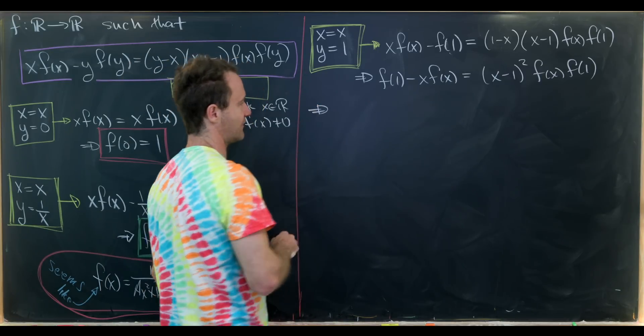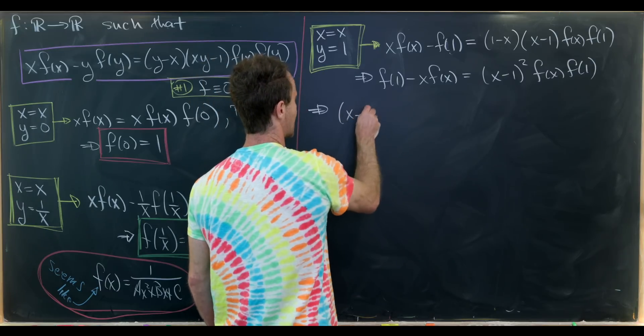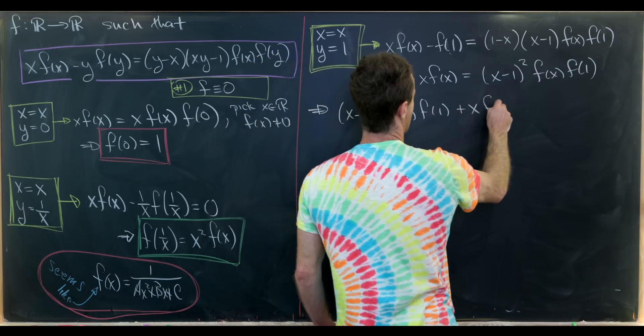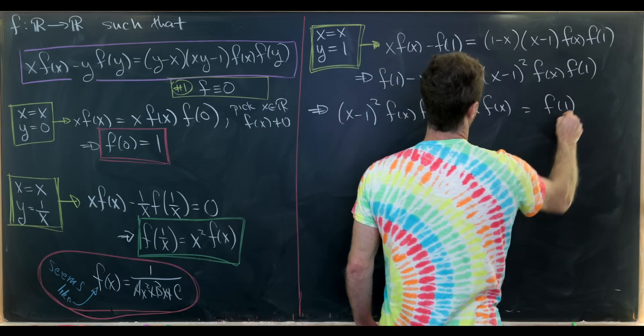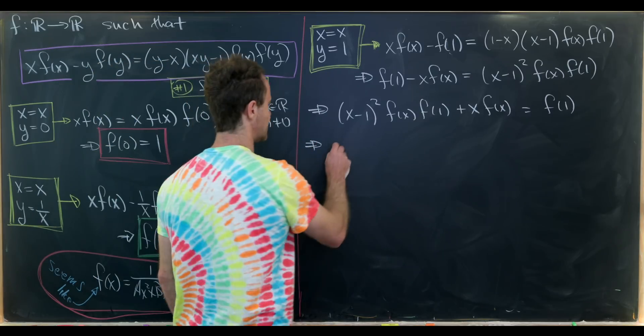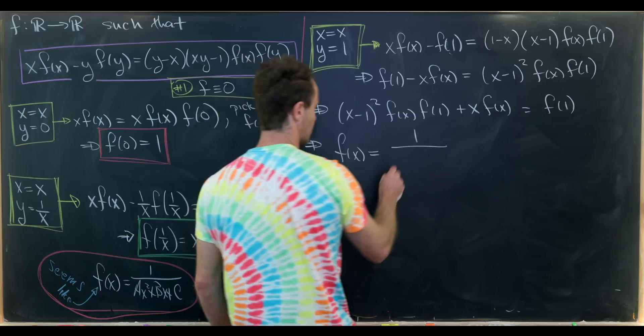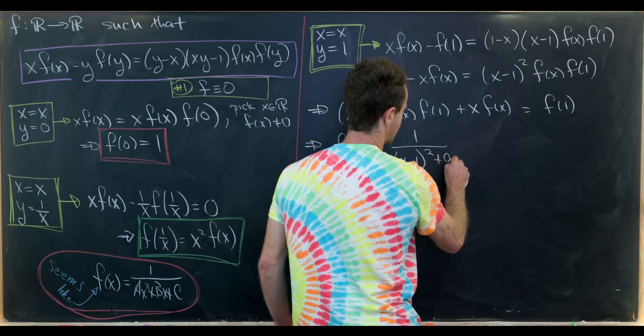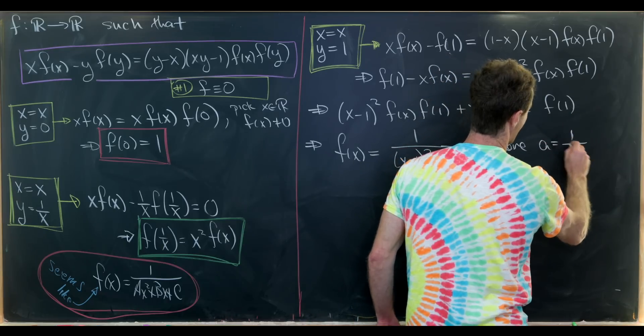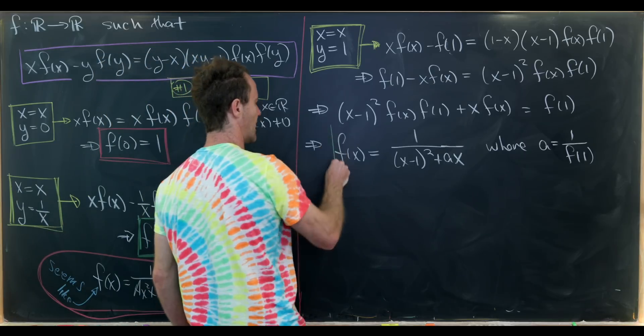So we'll move everything with an f(x) to one side and everything without to the other side. That'll leave us with (x-1)²f(x)f(1)+xf(x) equals f(1). But now we can solve this for f(x). We'll actually end up with this form: 1/[(x-1)²+ax] where a is equal to 1/f(1). So I think that's like a nice simplified way to write this.